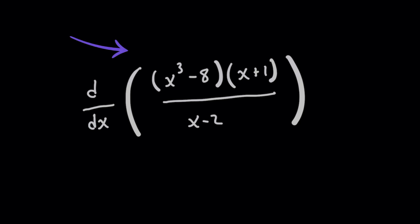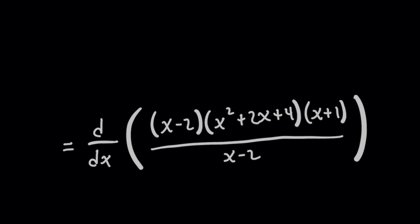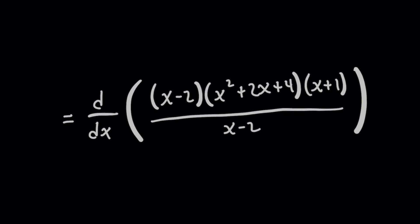Now x cubed minus 8 is interesting because I can rewrite that as x cubed minus 2 cubed. And a difference of two cubes, as we know, will factor really nicely because here when you factor it to x minus 2 times x squared plus 2x plus 4.